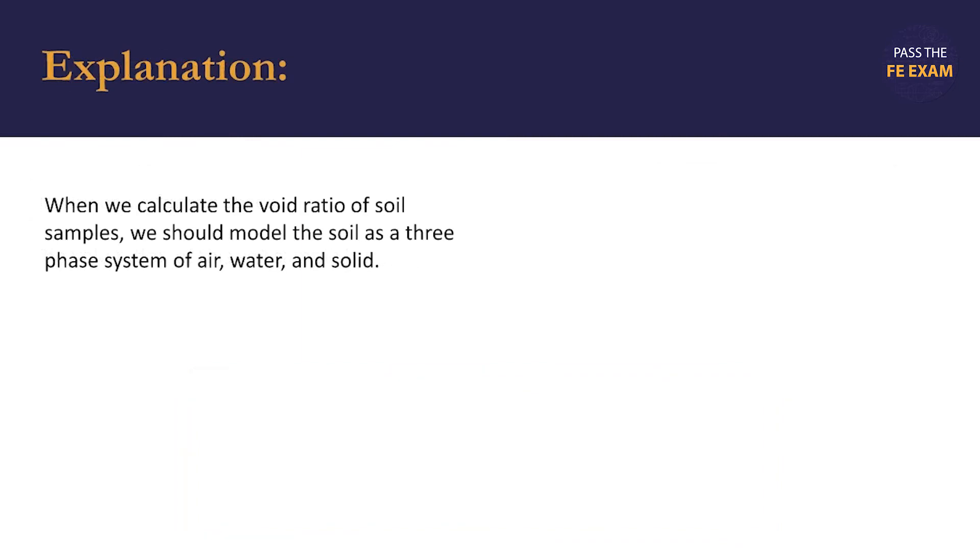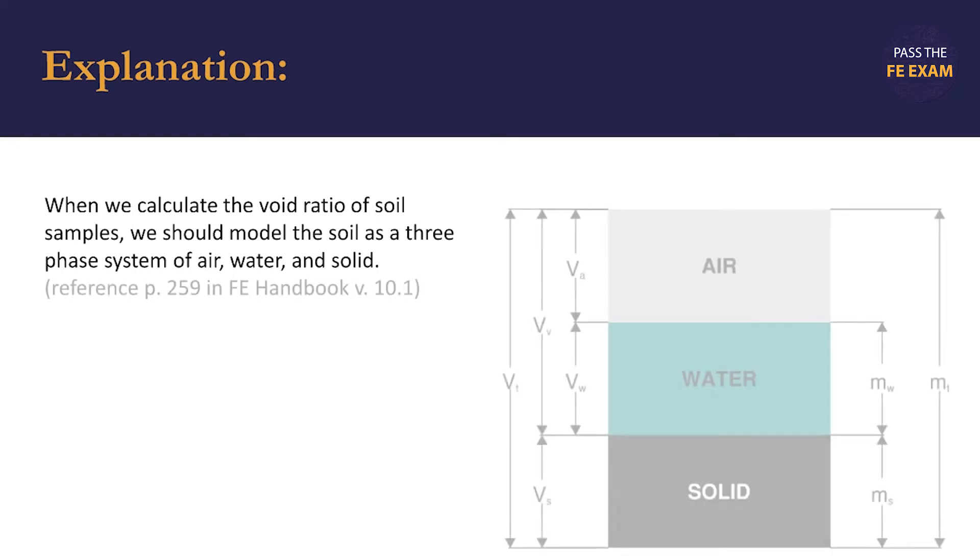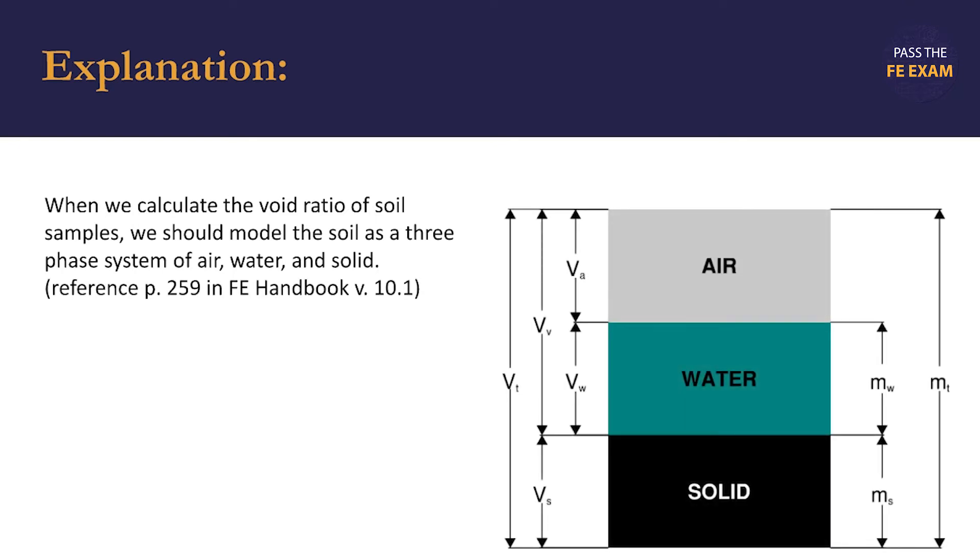When we calculate the void ratio of soil samples, we should model the soil as a three-phase system of air, water, and solid. On the first page of the civil engineering section of the FE handbook, we see a phase diagram similar to what's shown on the right.